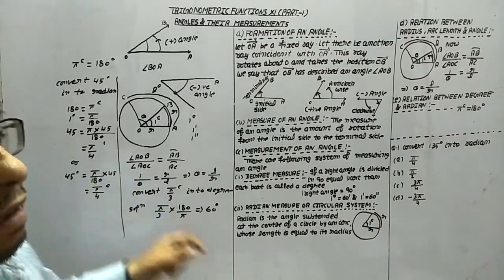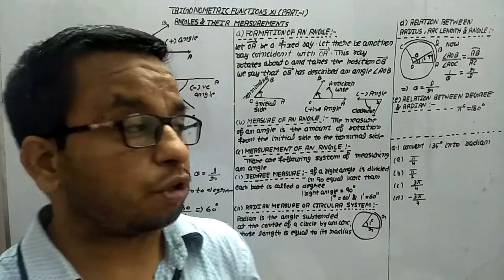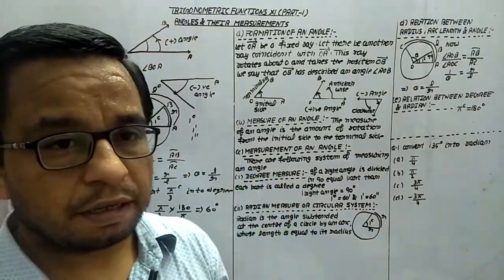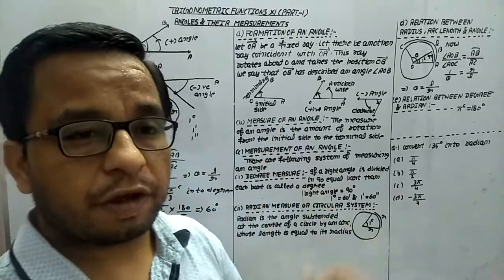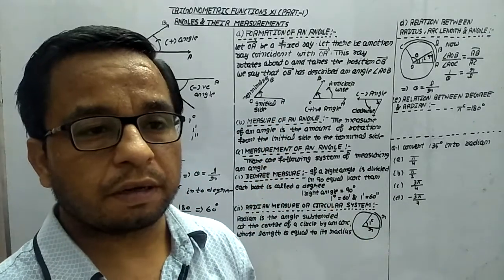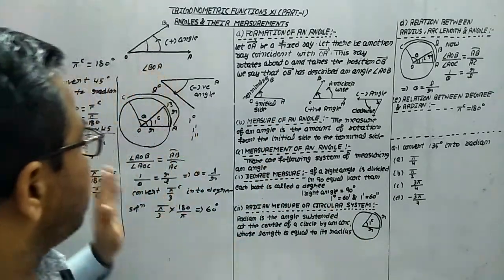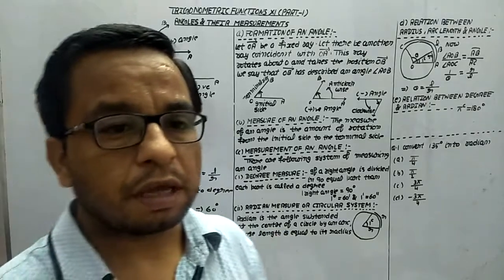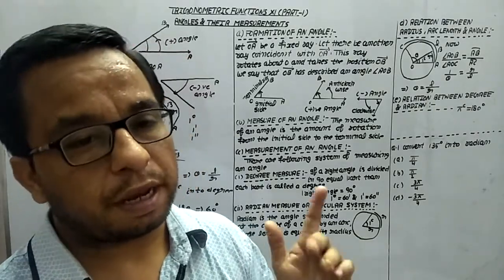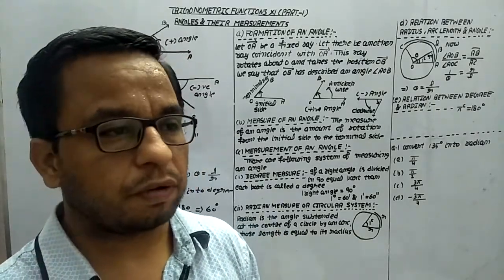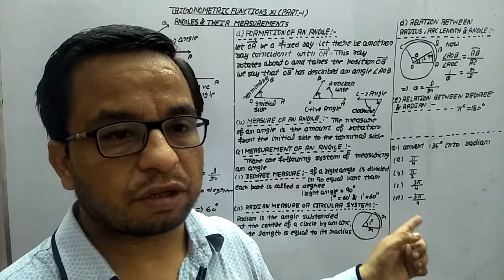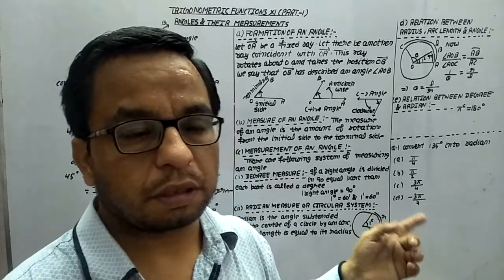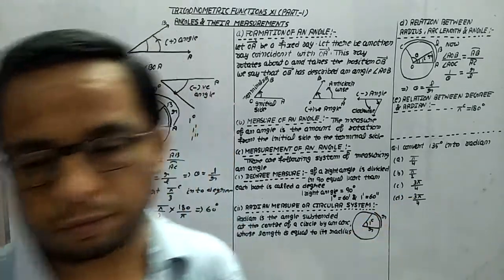And this is the answer. This is the way to change between degrees and radians. This starting point is very very important — on the basis of this, you have to solve other questions. I will explain more questions in the next video. Don't forget to give the answer to this question in the comment box. Thanks and God bless you.